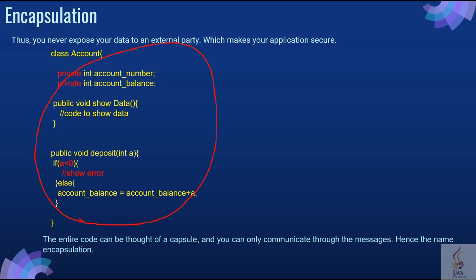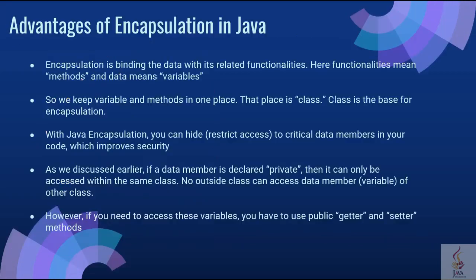There are several advantages of encapsulation. Encapsulation is binding the data with its related functionalities — functionality means methods and data means variables. So we keep variables and methods in one place: the class. Class is the base for encapsulation. With Java encapsulation, you can hide restricted access to critical data members in your code, which improves security. If a data member is declared private, it can only be accessed within the same class. No outside class can access data members of another class. However, if you need to access these variables, you have to use public getter and setter methods.